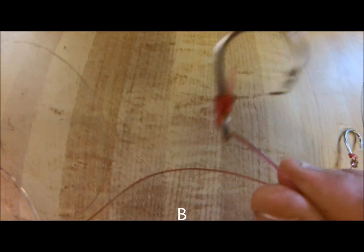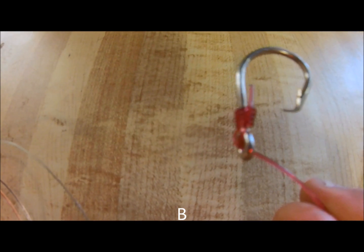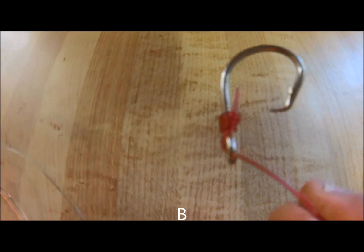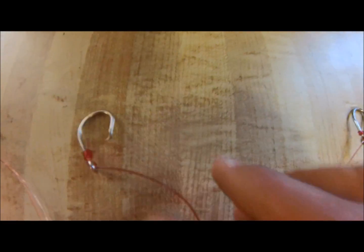The second hook we're going to look at is hook B. This hook is snelled correctly. As you can see, the line comes through the front of the eye on the inside of the hook. This is the proper way to snell a hook.